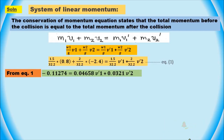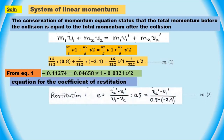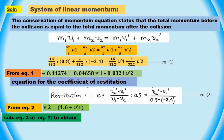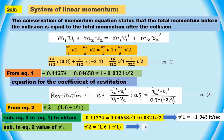Next, we will use the equation for the coefficient of restitution, which states that E equals the velocity difference after collision divided by the velocity difference before collision, where V1' and V2' are the final velocities of the two cylinders after the collision. By solving this equation, we can find the final velocities: V1' equals negative 1.943 feet per second, and V2' equals negative 0.343 feet per second.